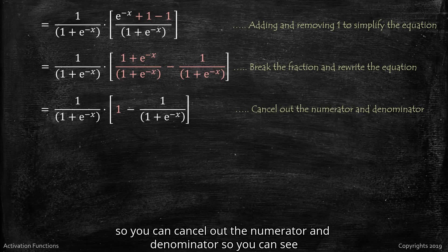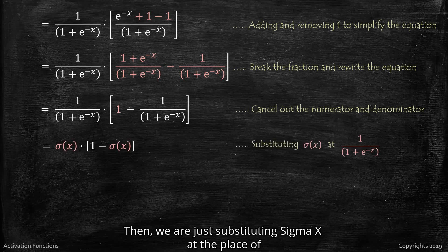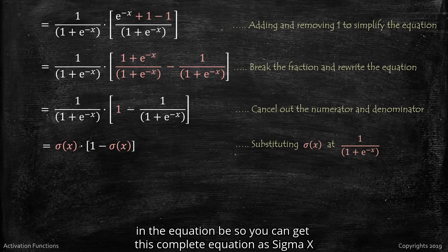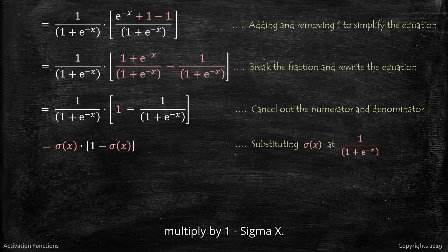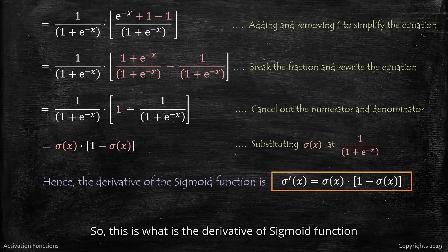We can cancel out the numerator and denominator, so it now becomes 1 minus 1 divided by 1 plus e raised to minus x. Then we substitute sigma(x) in place of 1 divided by 1 plus e raised to minus x, giving us the complete equation: sigma(x) multiplied by 1 minus sigma(x). This is the derivative of the sigmoid function.